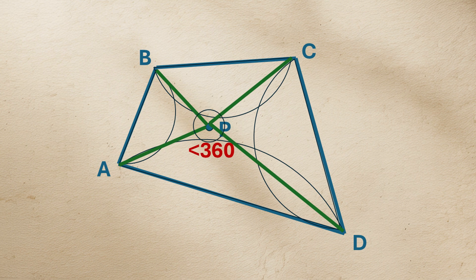However, for any point inside a convex quadrilateral, these four angles around P must sum to exactly 360 degrees. This is a contradiction.